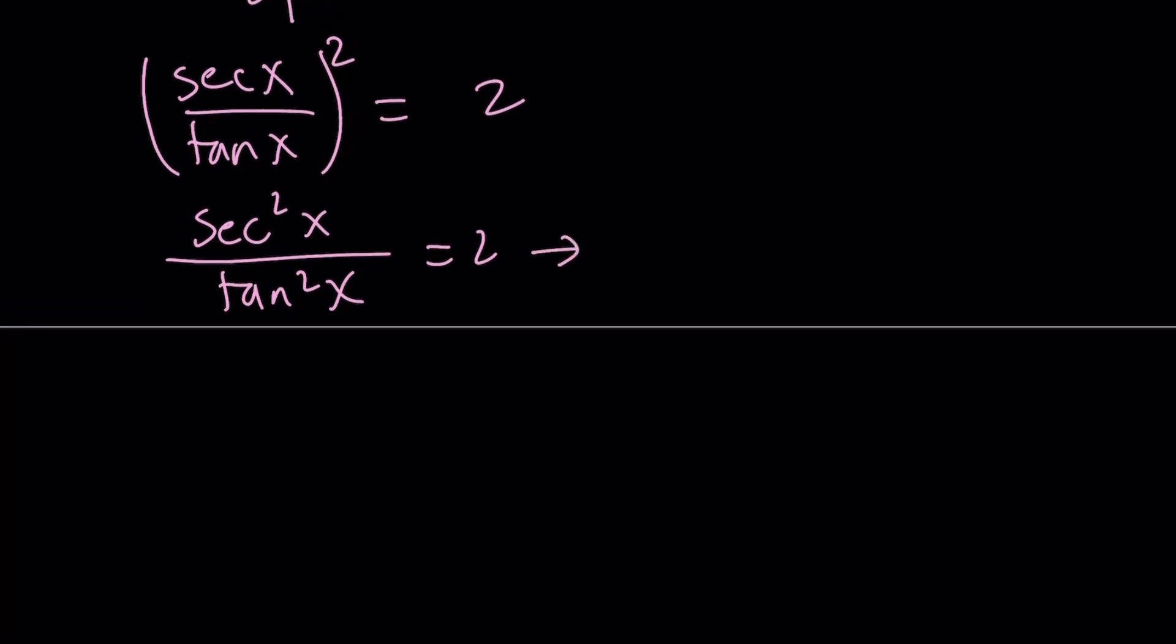Let's go ahead and multiply both sides by tangent squared. And now we can use our famous identity. Secant squared is the same as 1 plus tangent squared. That's a very helpful identity.